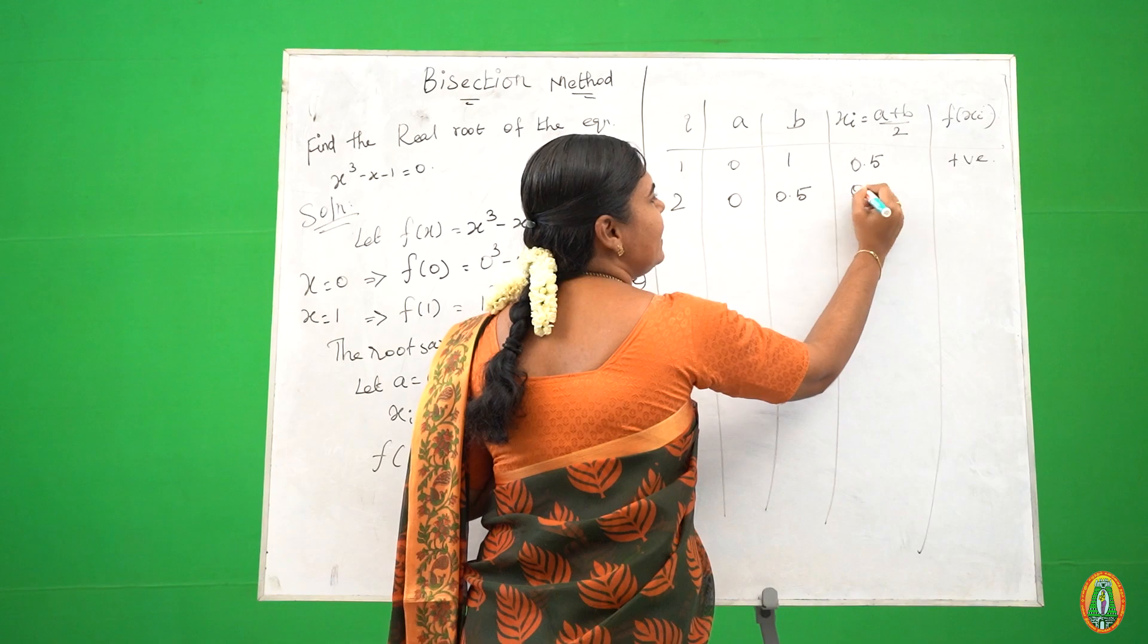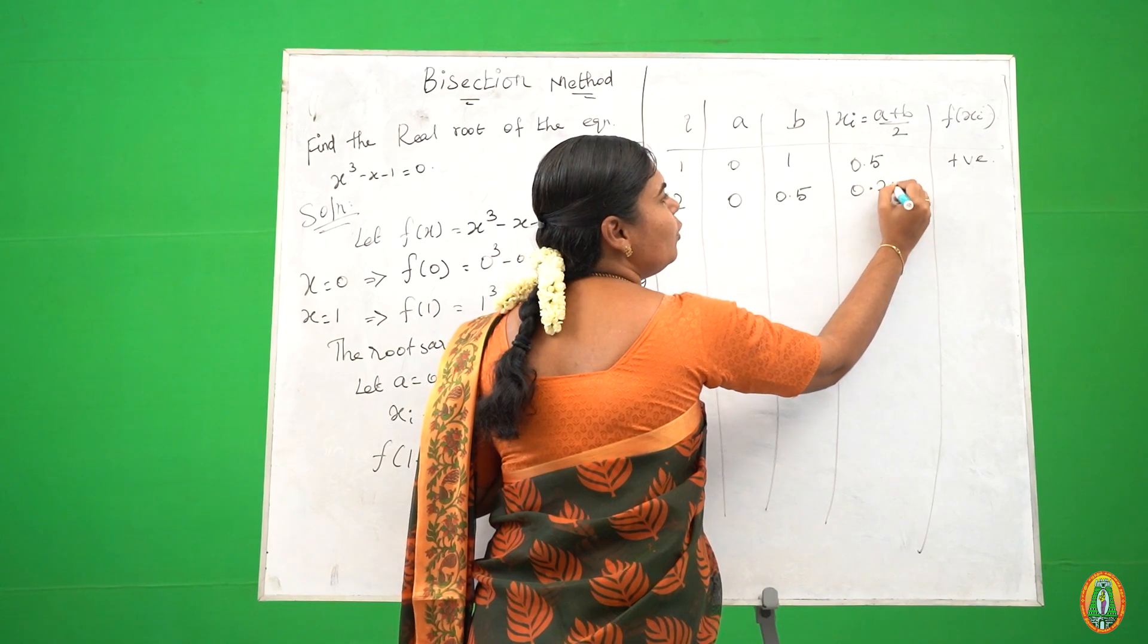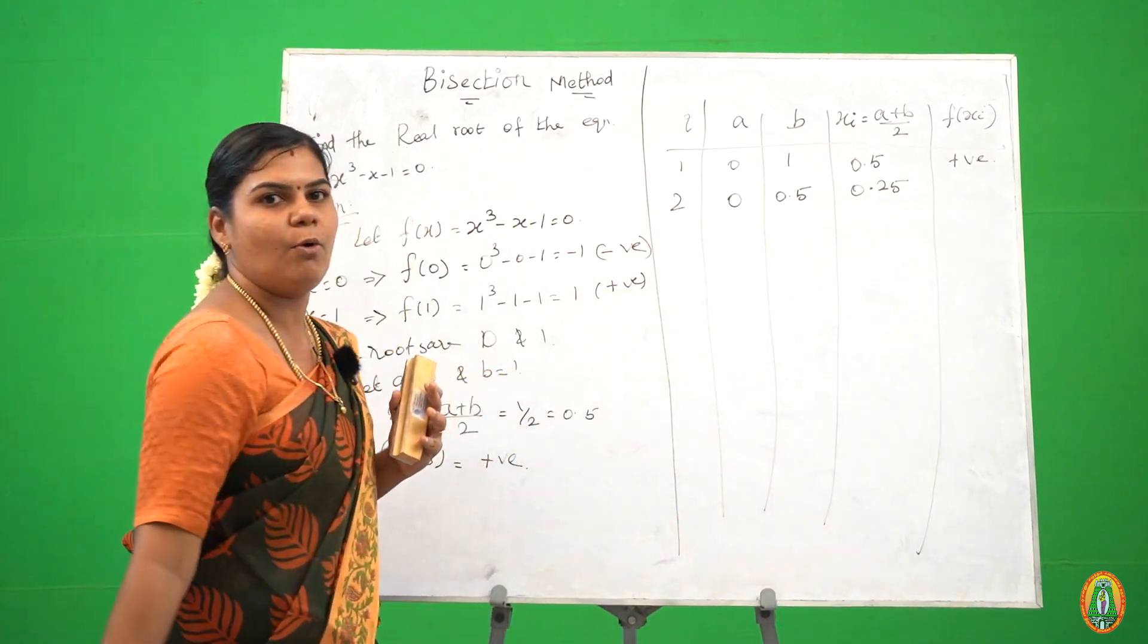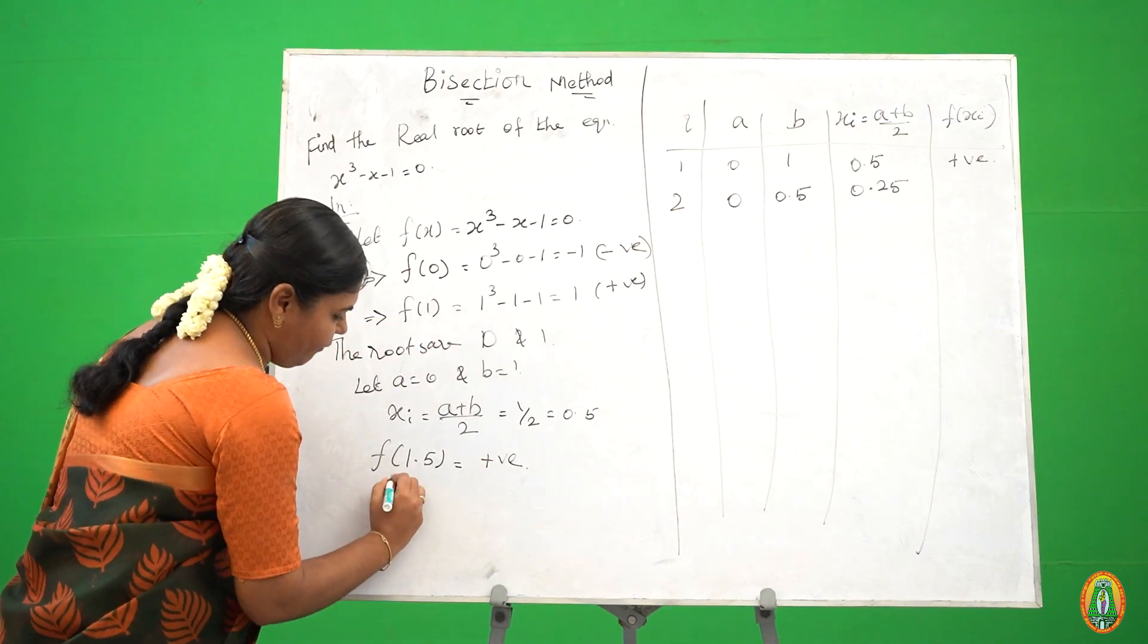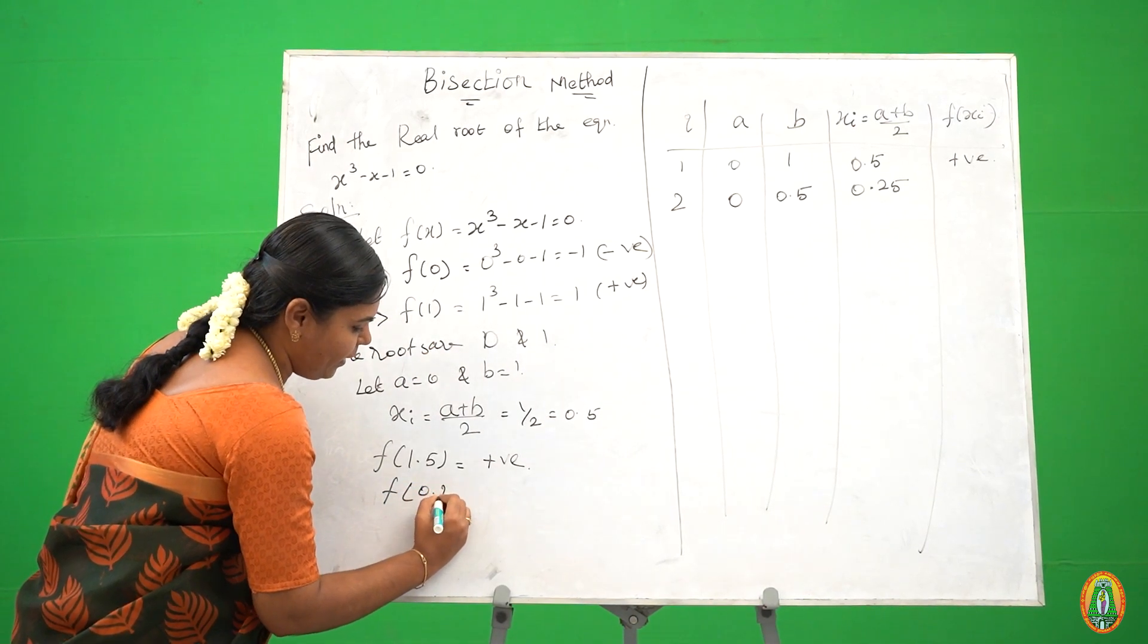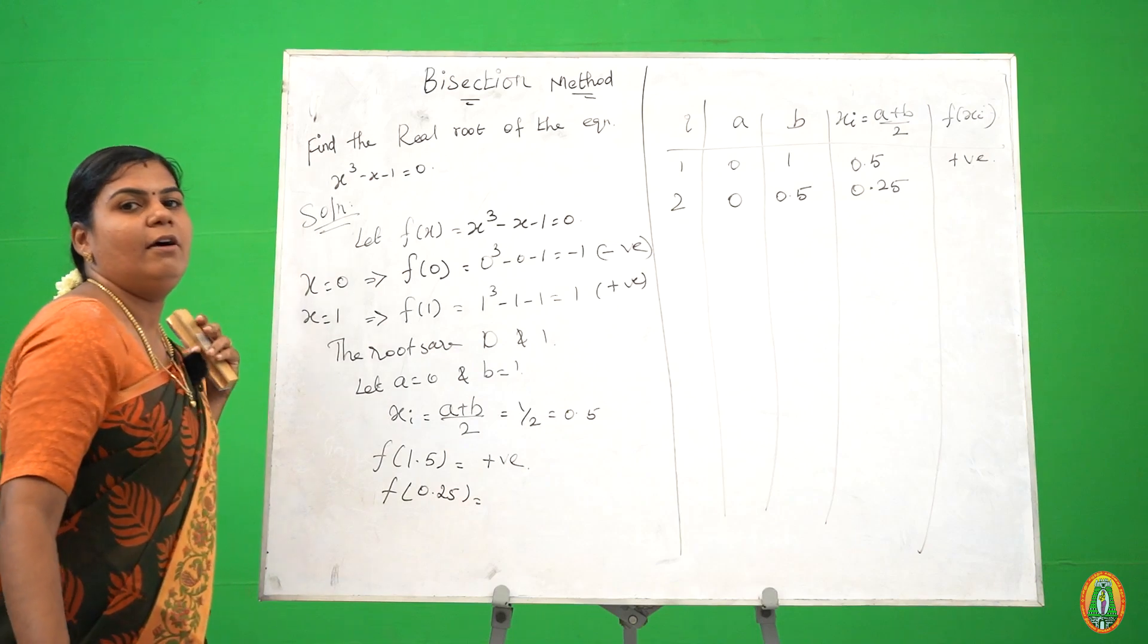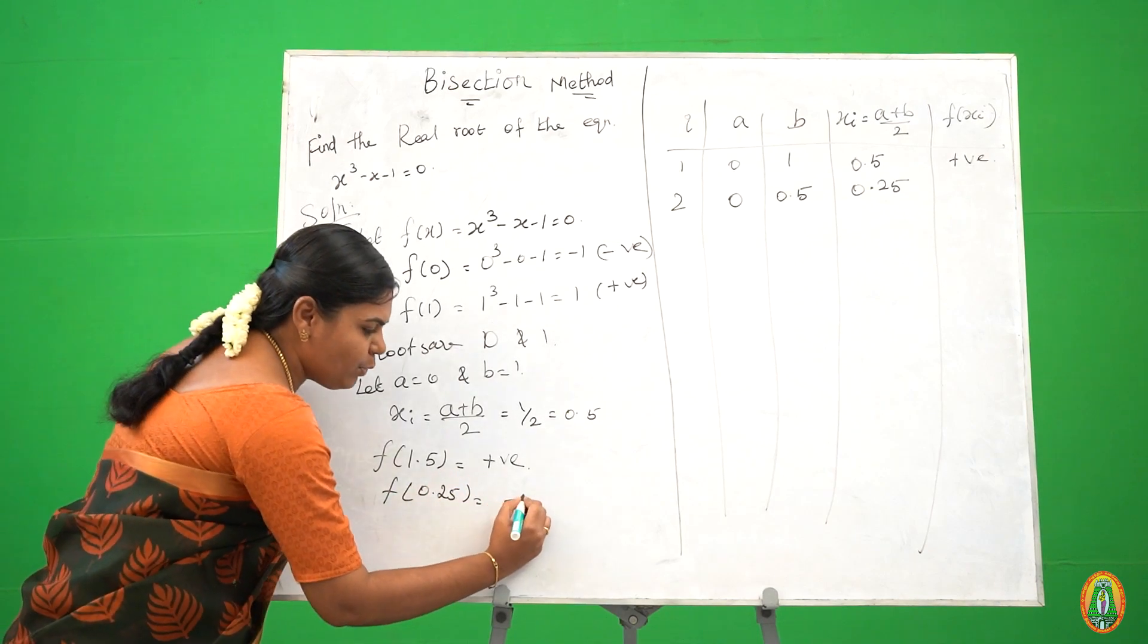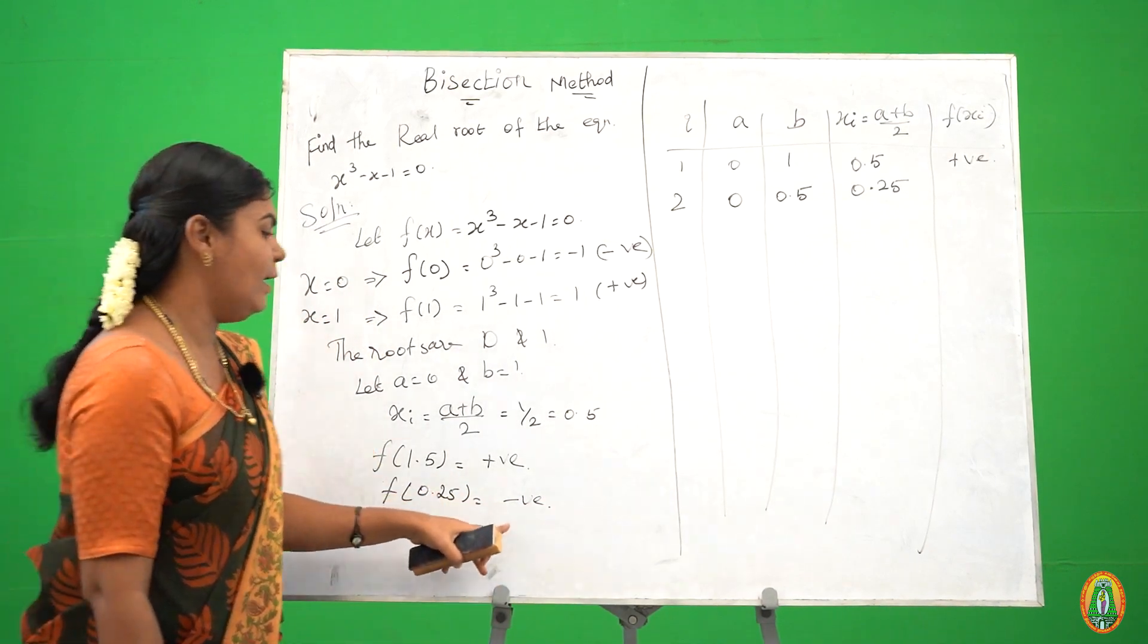So we got 0.25. Xi is 0.25. So we get f of 0.25. Suppose we get a negative value.